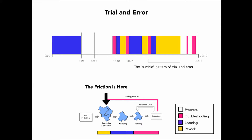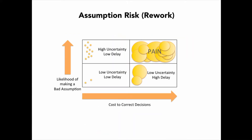You get very distinctive patterns. For example, this is what trial and error looks like. The red is a strategy conflict — when I realized my strategy wasn't going to work. The blue is the time you spend coming up with a new strategy. Yellow is the time you spend reworking things to get back into your plan B. If you go through multiple trials, you get these multiple stripes. I'm mapping this to various risk models: assumption risk drives the amount of rework we do. Assumption risk is driven by the likelihood of making a bad assumption and the cost to correct decisions — things like bad assumptions about architecture design or customer requirements will increase the size of those trial-and-error bands.